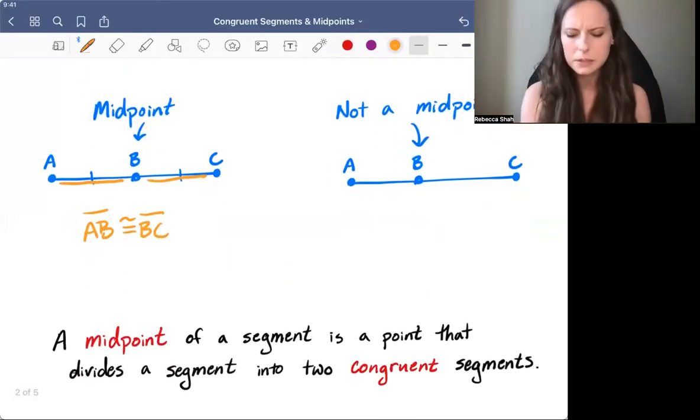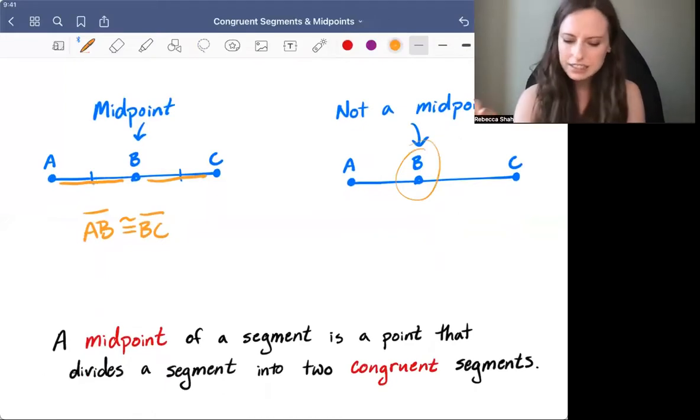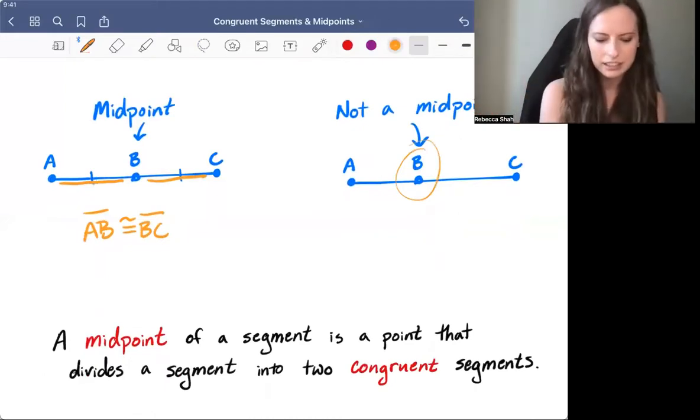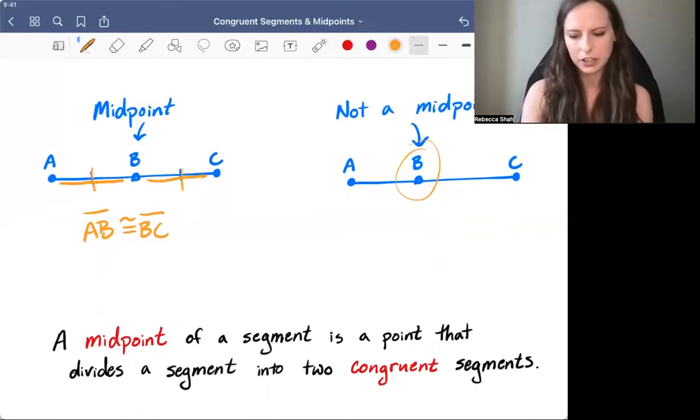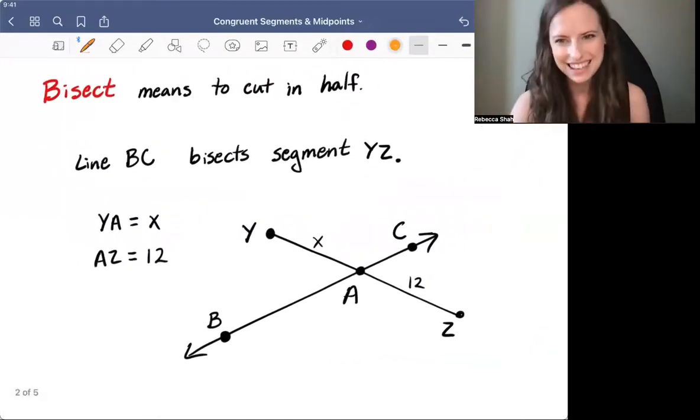Just be careful. Just because a point is somewhere in the middle of a segment doesn't make it a midpoint. You would have to either be told that it's a midpoint or actually see those hash marks in the diagram. Now that leads us to our third and final word, bisect.